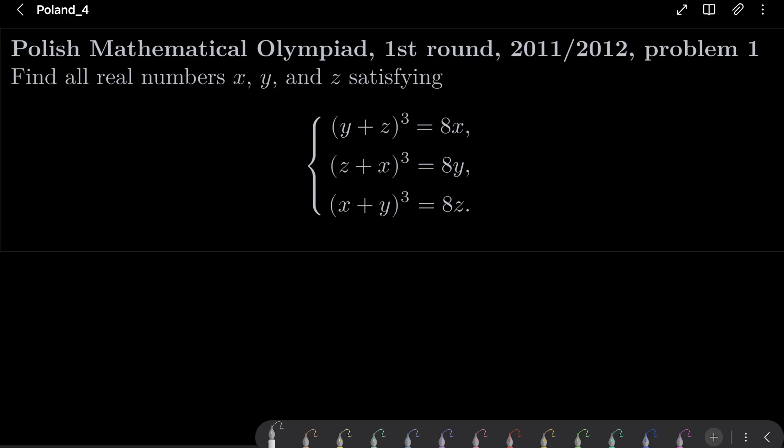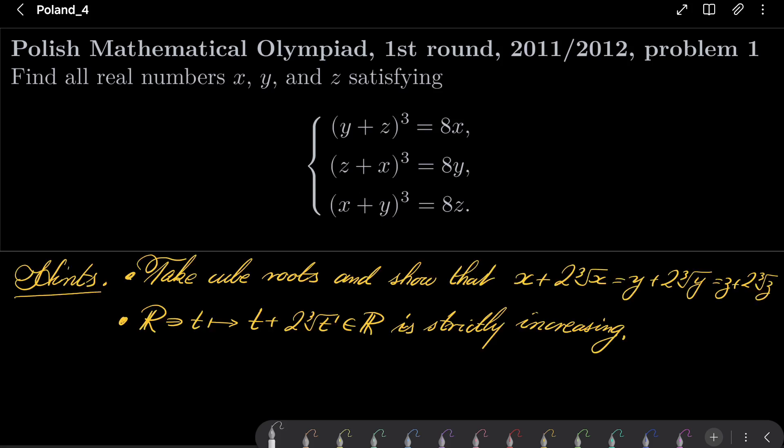It's a fairly simple problem, here are my hints. Take cube roots on every equation to show that x + 2∛x = y + 2∛y = z + 2∛z.